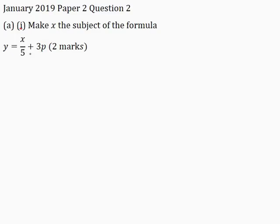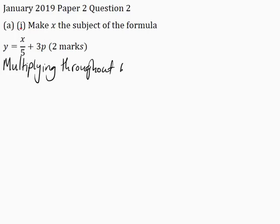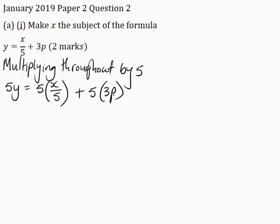The first thing I want to do here is to remove this 5 from the denominator of x. I will do this by multiplying this entire equation by 5 — multiplying throughout by 5. So this becomes 5y is equal to 5 times (x over 5), plus 5 multiplied by 3p.